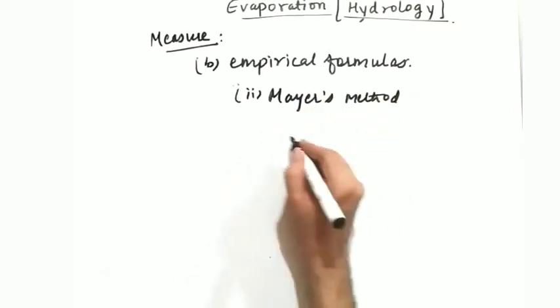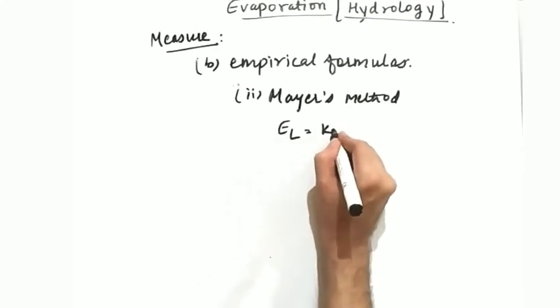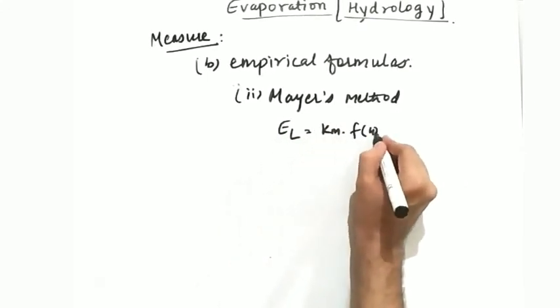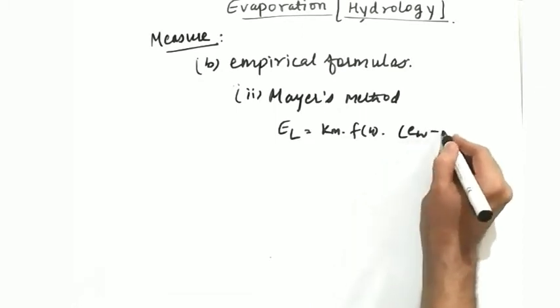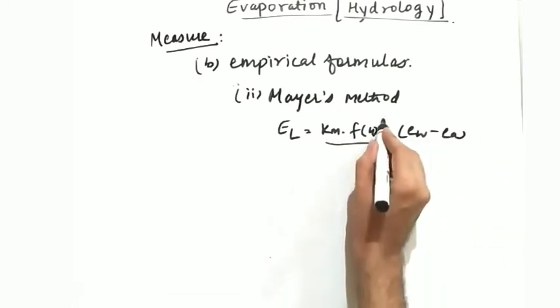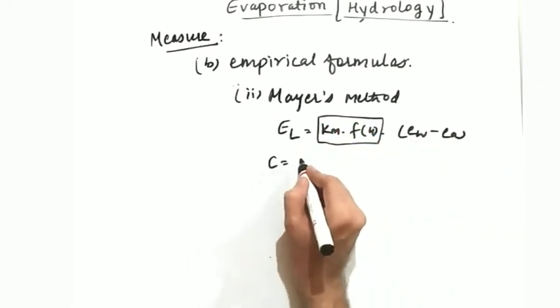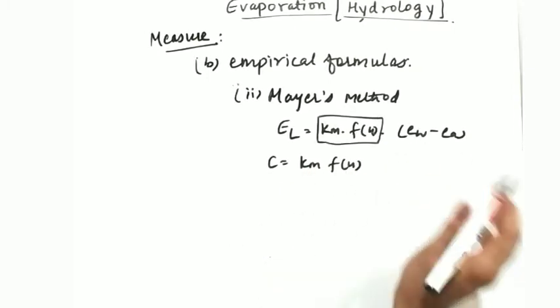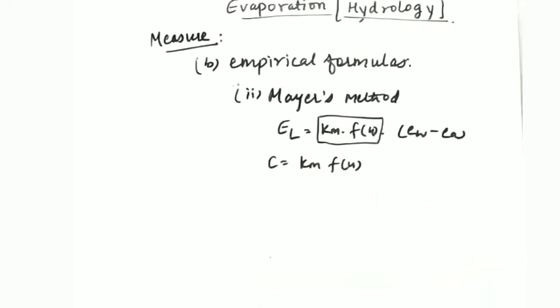There is an empirical formula. EL will be equal to Km f(u) times Ew minus Ea. Instead of C, it has C equal to Km times f(u). The rest are the same. Ew and Ea are same terms that were used in Dalton's method. What is f(u)? f(u) is 1 plus U9 divided by 16.